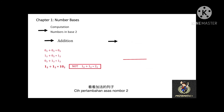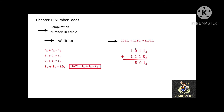Let's see this addition example. 1011 base 2 plus 11 base 2: 1 plus 1 equals 10 (write 0, carry 1); 1 plus 1 equals 10 (write 0, carry 1); 1 plus 1 equals 10; and lastly, 1 plus 1 plus 1 equals 11.